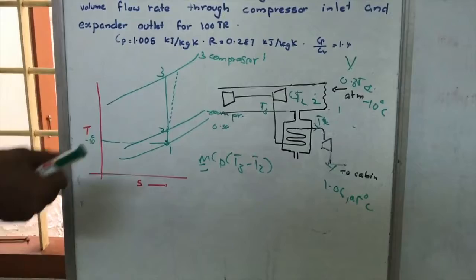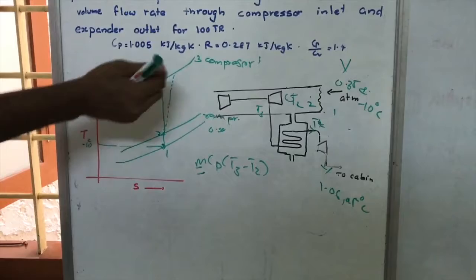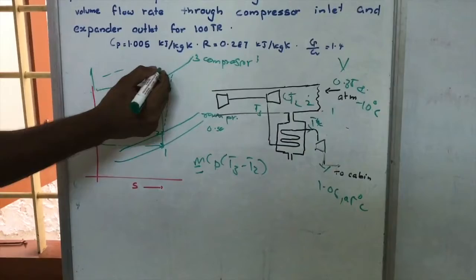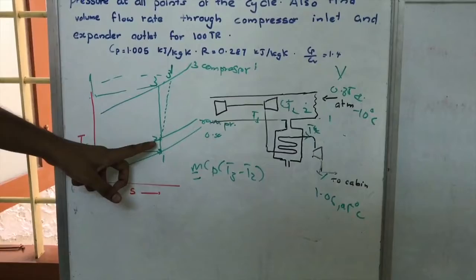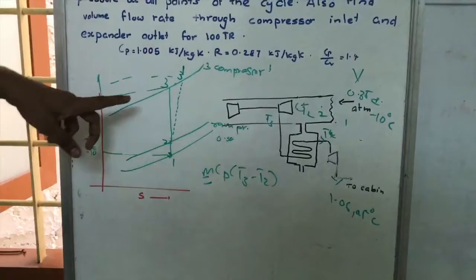Since more work is required due to the efficiency, Point 3 will be at a higher temperature than the ideal T3. The air coming out of the compressor will have a temperature slightly more than T3. This actual exit point is called 3-dash, and the process 2 to 3-dash is non-ideal compression.